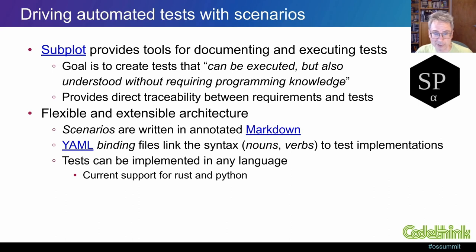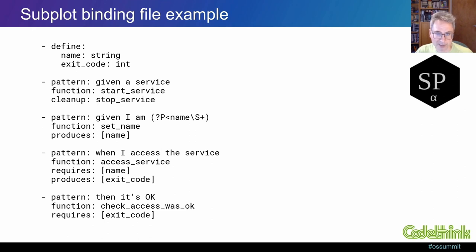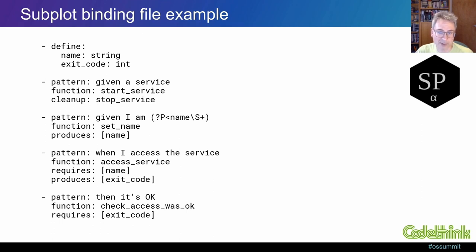The best way to explain what that means is to show you an example. As you can see in this example from the Subplot documentation, the structure of the file is reasonably simple. It begins with some type definitions for two pieces of data used in the tests — one of them is a string and the other an integer. It then identifies a pattern, that is a sequence of texts to be included in a scenario definition for a given clause, which includes the corresponding function to be called in the test implementation. The first example includes a cleanup function, which is called at the end of the test, for example to release a resource that was assigned. The second example has a produces clause, which is how an item of test data is identified from the scenario text using the definitions from the start of the file. The third example illustrates how this data can then be used in a subsequent test step. And the final example shows how the result of a when step can be checked in a then clause.